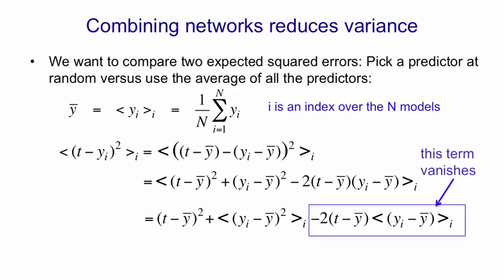It disappears because the difference of yi from y bar we expect to be uncorrelated with the difference between the error that the average of the networks makes and the target. So we're multiplying together two things that are zero mean and uncorrelated, and we expect to get zero on average. So the result is that the expected squared error we get by picking a model at random is greater than the squared error we get by averaging the models by the variance of the outputs of the models. That's how much we win by when we take an average.